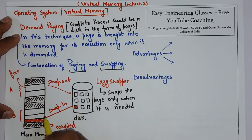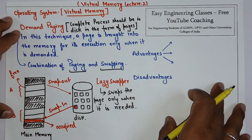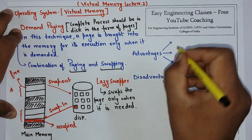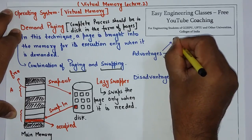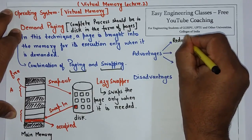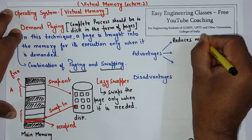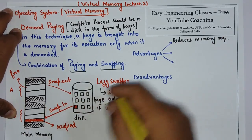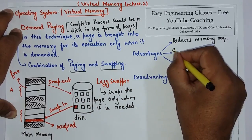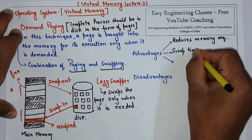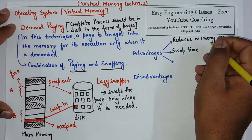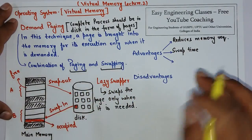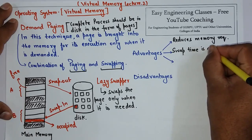If the process is needed, we can swap in and allocate the frame. Now, what are the advantages of this technique? The first advantage is it reduces the memory requirement. The second advantage is swap time is also reduced, because we are not swapping out and swapping in the entire process — we are swapping only the part of the process which is the page. So the swap time is also reduced.